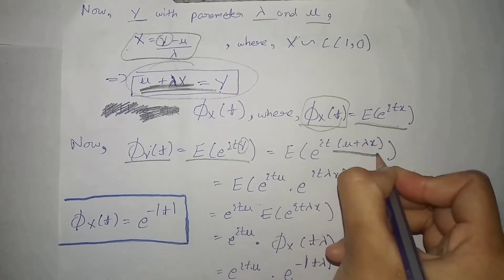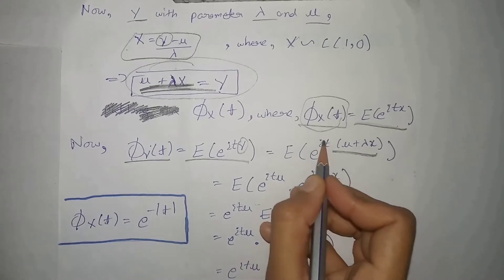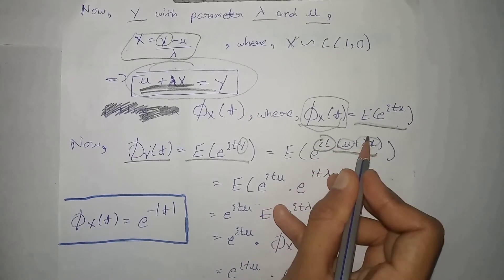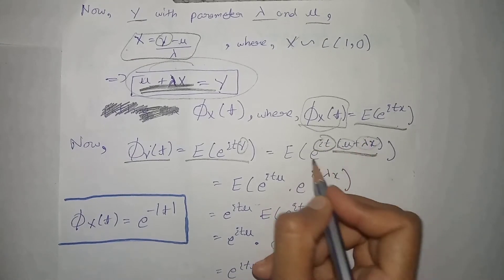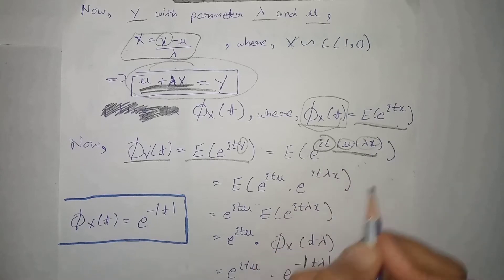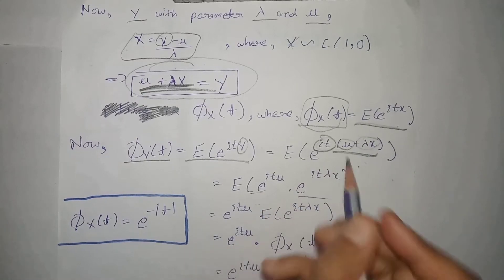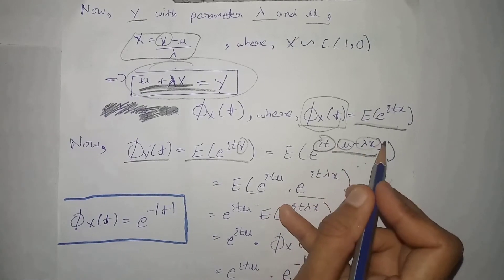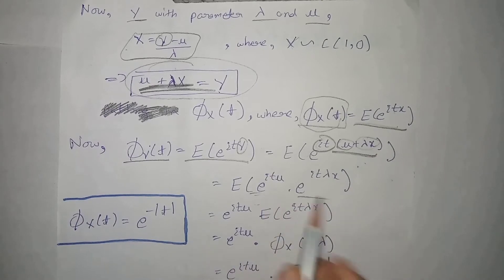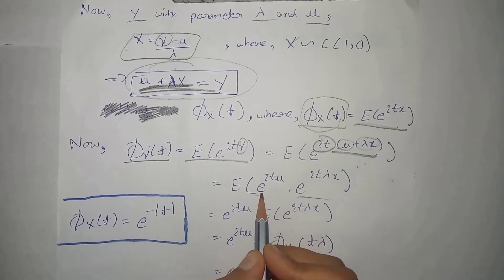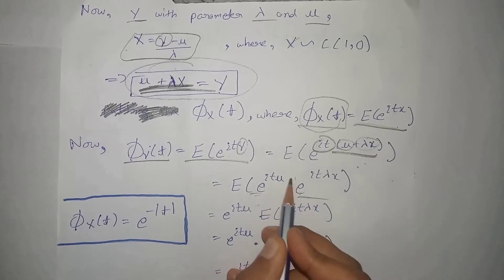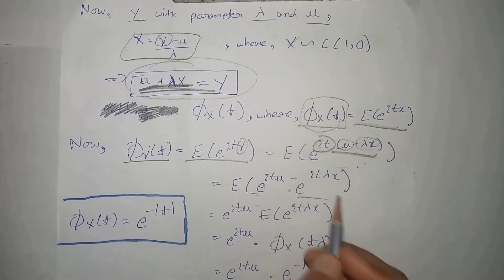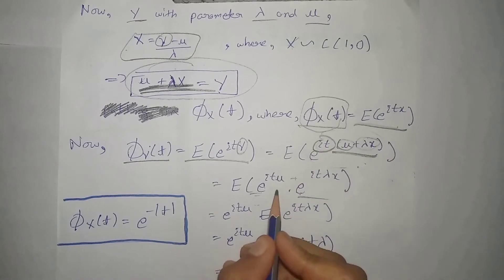Putting y's value here and multiplying the terms together, we separate the base because this term plus this term is in the exponent. Since the base is the same, powers add up and we get that term back. Now this becomes a constant term multiplied by the variable. We know that expectation of a constant times x equals the constant times the expectation of x, so that constant comes outside the expectation.